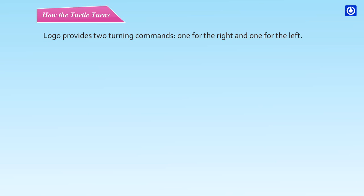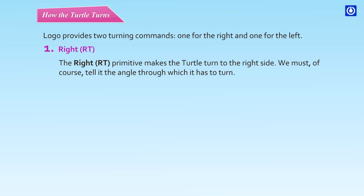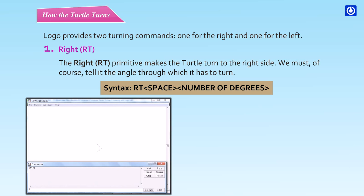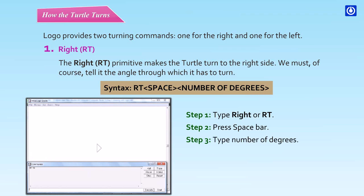Logo provides two turning commands, one for the right and one for the left. The RT (right) primitive makes the turtle turn to the right side. We must tell it the angle through which it has to turn. Syntax: RT space number of degrees. Step 1: Type 'right' or 'rt'. Step 2: Press spacebar. Step 3: Type number of degrees. Step 4: Press Enter.